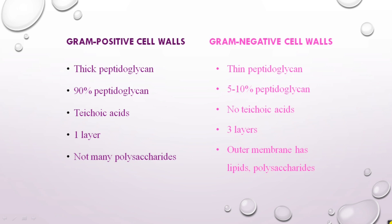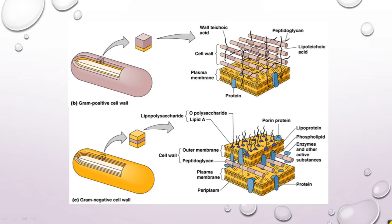The outer membrane of the gram negative cell wall is made up of lipids and polysaccharides. This picture shows the gram positive cell wall as well as the gram negative cell wall. In gram positive there is a thick peptidoglycan layer, below which is teichoic acid, lipoteichoic acid, a plasma membrane and proteins. In gram negative you can see a thin peptidoglycan layer and an outer membrane made up of lipoproteins and phospholipids, along with enzymes and other active substances.